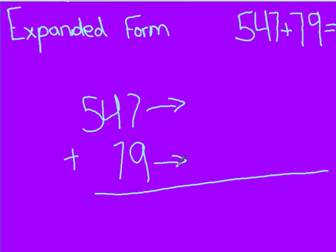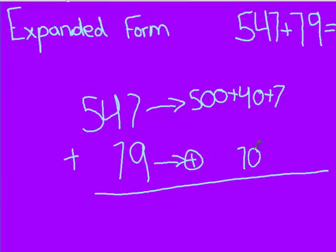Next you expand 547 to 500 plus 40 plus 7 beside the top arrow. Then you write a plus sign and circle it, and write 70 under the 40 and 9 under the 7.